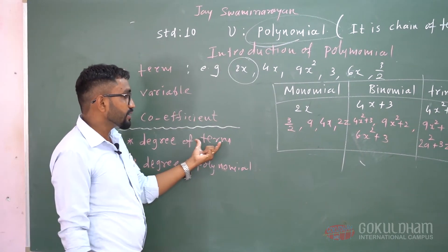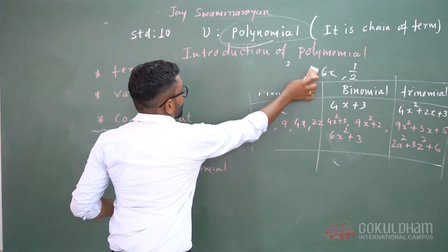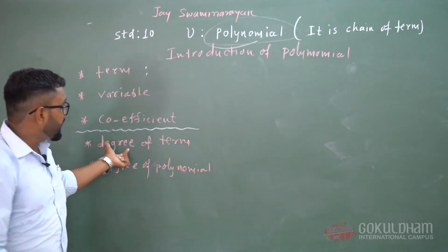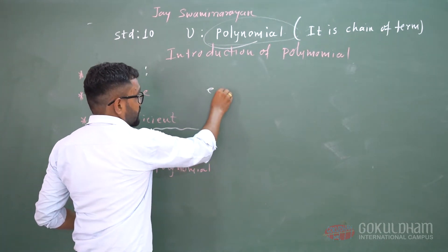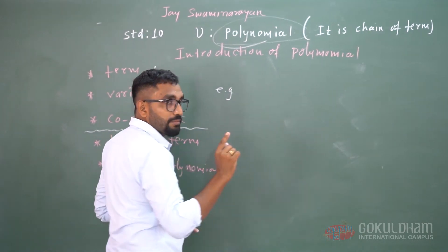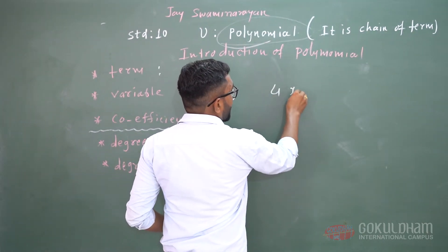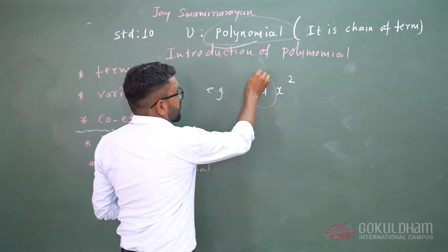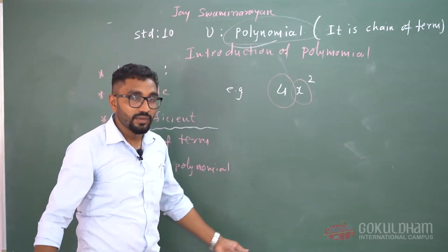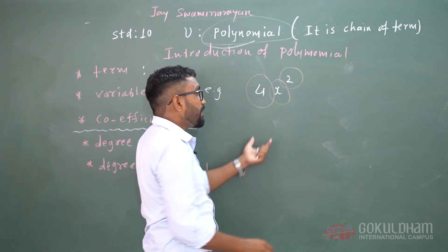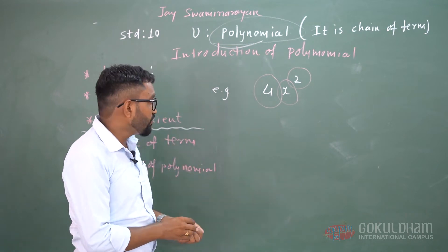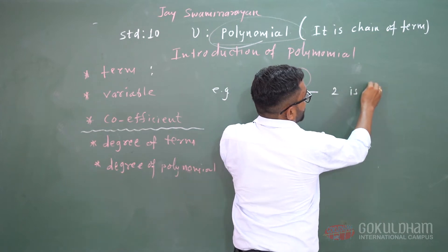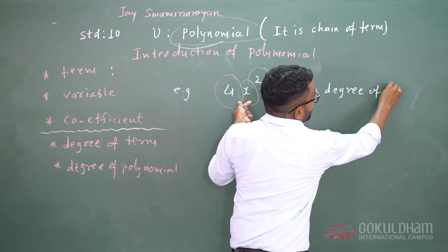Now we discuss the degree of term. Take one example — suppose degree of term. We take one example of a monomial: 4x square. In 4x square, 4 is the coefficient, x is the variable, and 2 is the power of x. It is called the degree of term. In term 4x square, 2 is the degree of term.